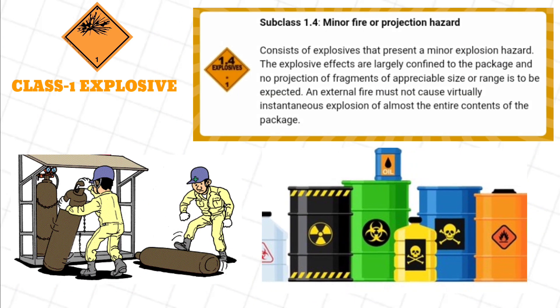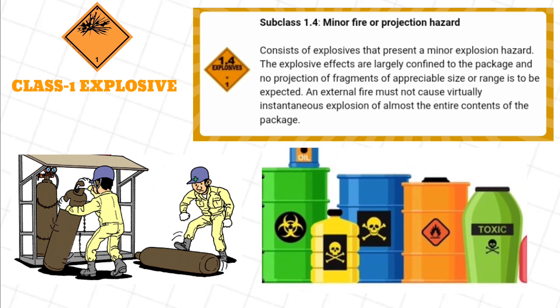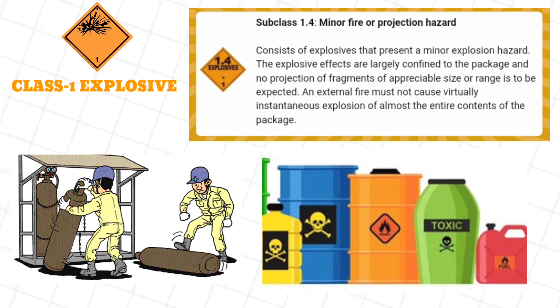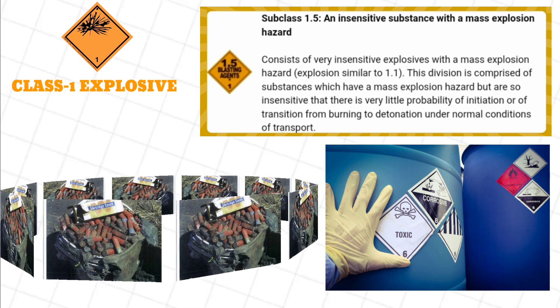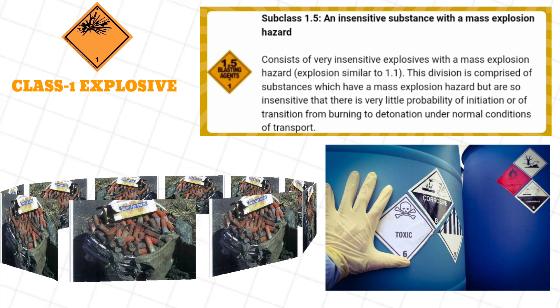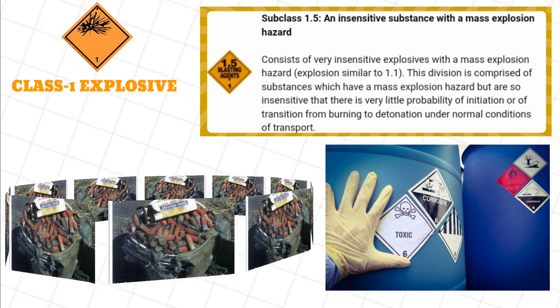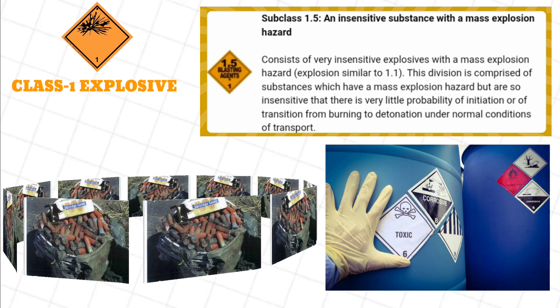Subclass 1.4, Minor fire or projection hazard, consists of explosives that present a minor explosion hazard. Subclass 1.5, An insensitive substance with a mass explosion hazard, consists of very insensitive explosives with a mass explosion hazard, similar to 1.1. This division is comprised of substances which have a mass explosion hazard but are so insensitive that there is very little probability of initiation or of transition from burning to detonation under normal conditions of transport.